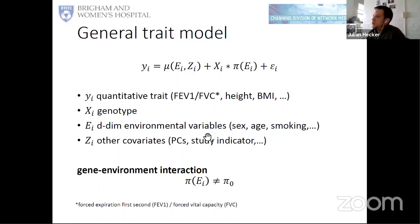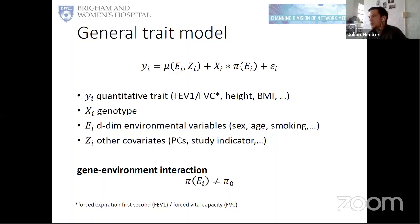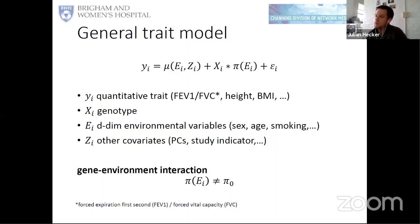In this talk, I will discuss a quantitative trait model. We are considering a quantitative trait such as lung function, because at the Channing Division we are doing research on asthma and COPD and their lung function measurements — such as FEV1 over FVC, which is a very important measurement. But it could also be height or body mass index or any other quantitative trait that can be measured.